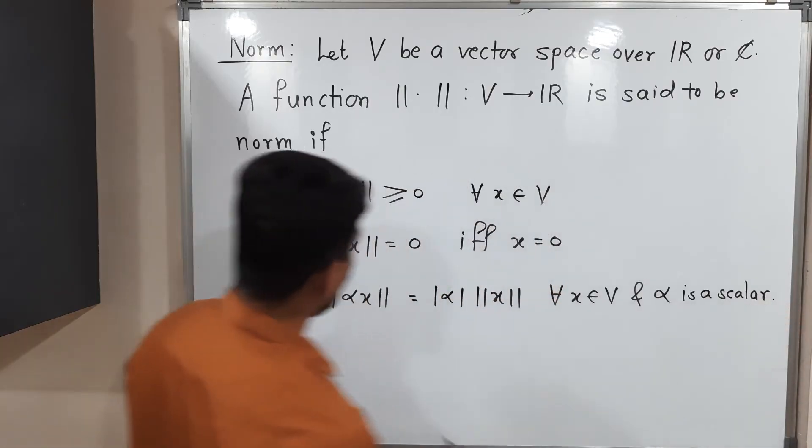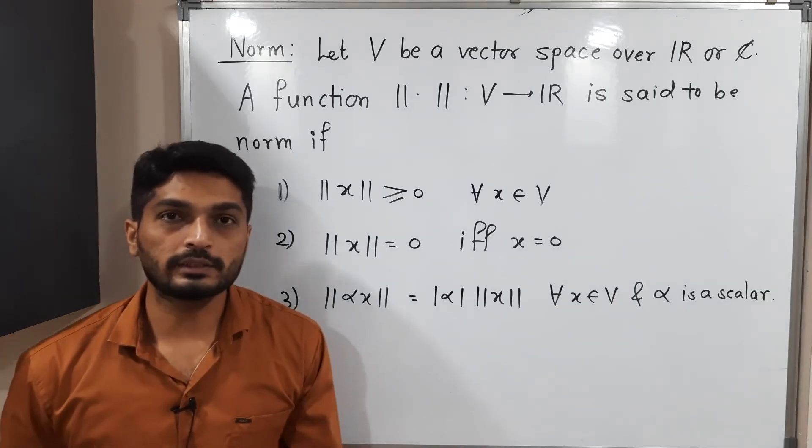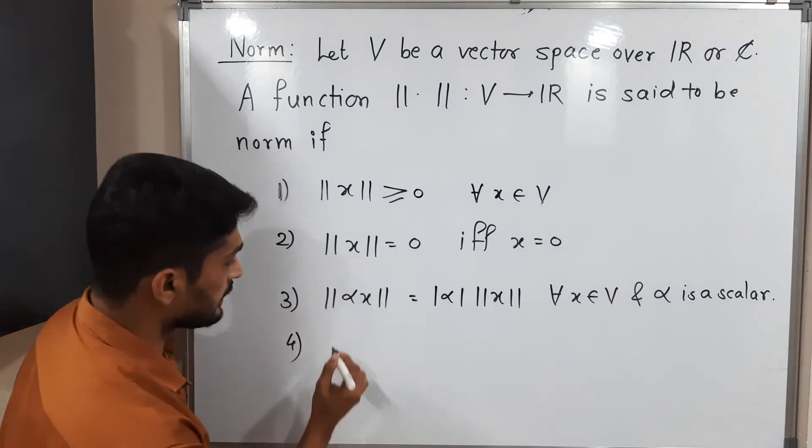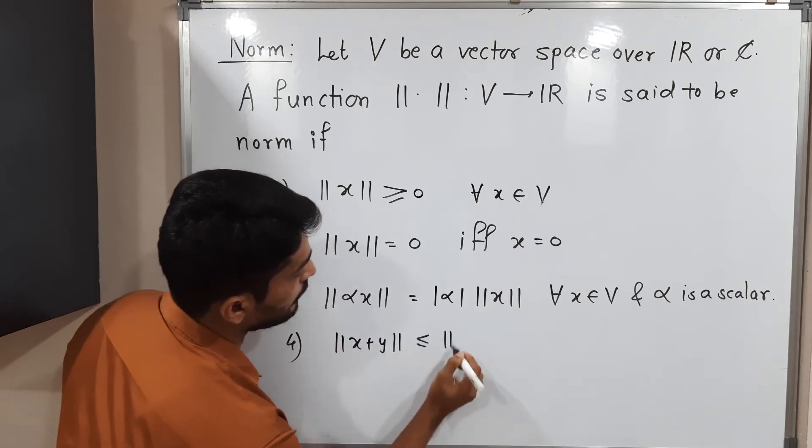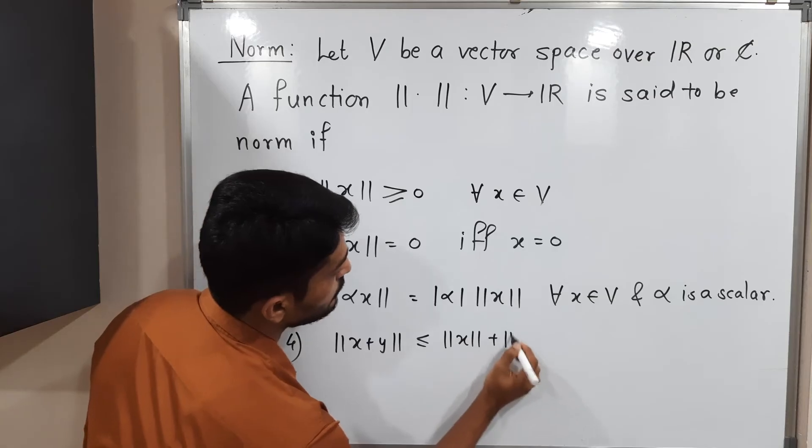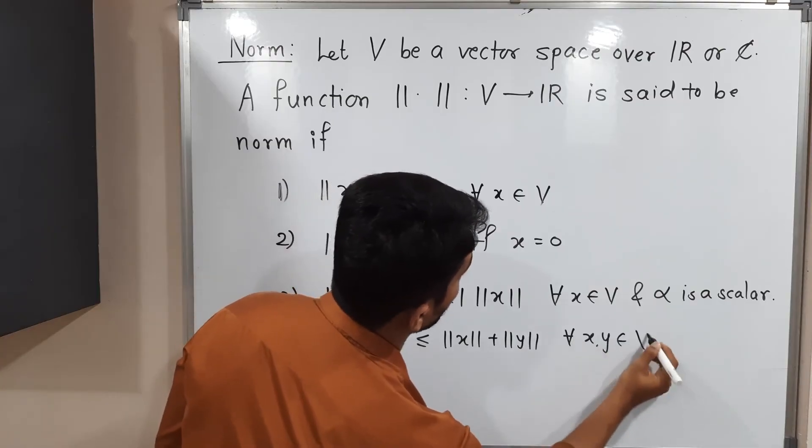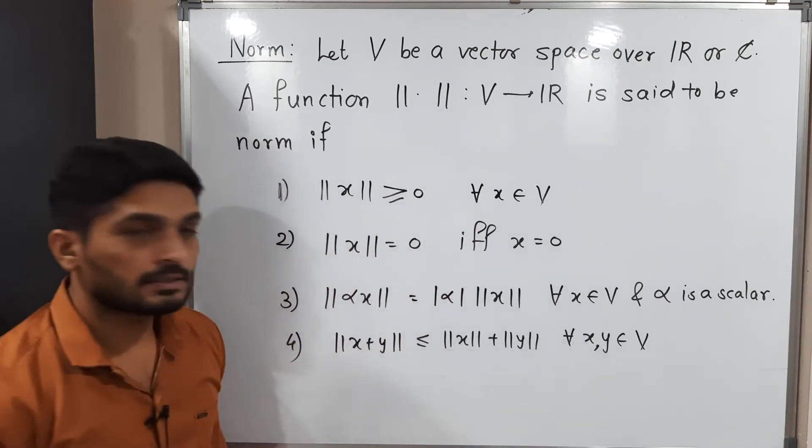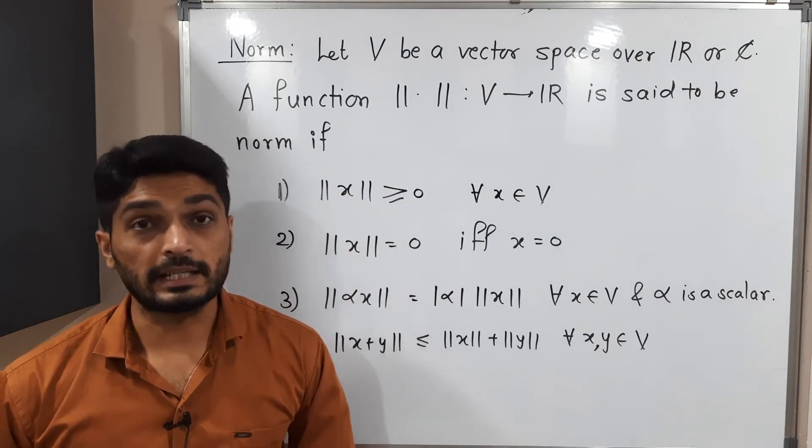And the fourth condition, this is well known as the triangle inequality: norm of X plus Y is less than or equal to norm X plus norm Y, for all X, Y belongs to V. If this function satisfies all four properties, then we can declare it is a norm on V.